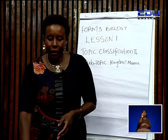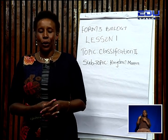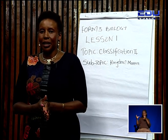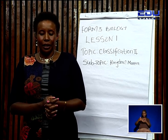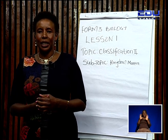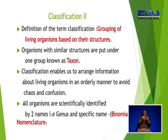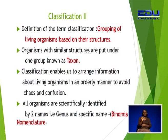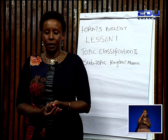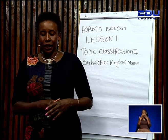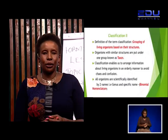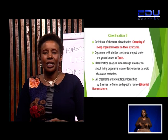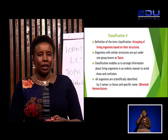In this topic, the introduction was done in Form 1, where Classification 1 was covered. A quick recap: classification is the grouping of living organisms based on their structures. We use their external structures and put them in one group known as a taxon. In Form 1, seven taxonomic units of classification were discussed. This classification enables us to arrange information about living organisms in an orderly manner in order to avoid chaos and confusion.